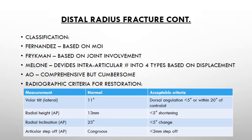Considering the classifications for distal radius fractures: Fernandez based theirs on the mechanism of injury, Frykman based it on joint involvement, and Melone's classification divides intra-articular fractures into four types based on displacement of the fracture. The AO classification has done tremendous work classifying all fractures in the body — it is very comprehensive, though a bit cumbersome, and is definitely one of the most comprehensive classifications available.